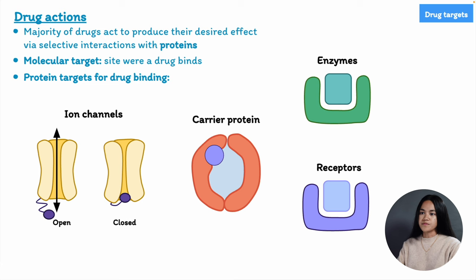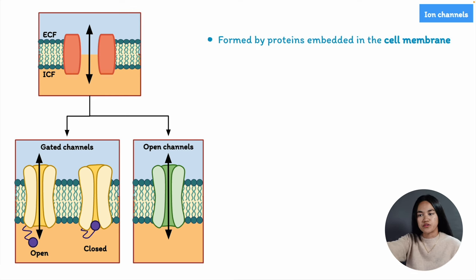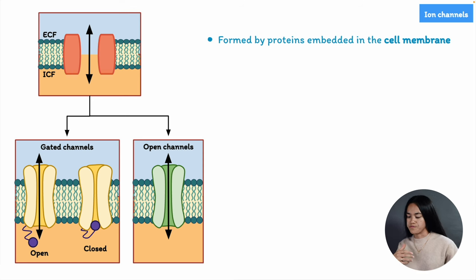Starting with ion channels — ion channels are membrane proteins that allow the passage of ions such as sodium, potassium, and calcium across cell membranes. They are formed by a single protein or a group of proteins embedded within the plasma membrane. These channels are really important in cellular communication between excitable cells — so neurons, muscles, and even cells involved in secretion.